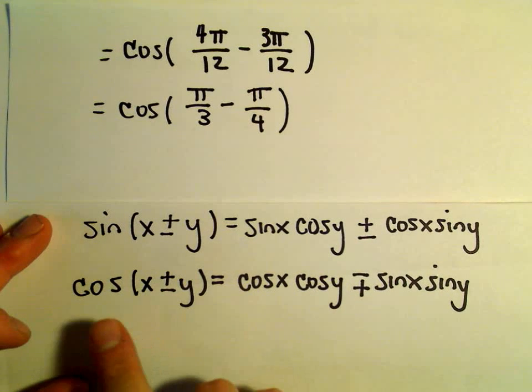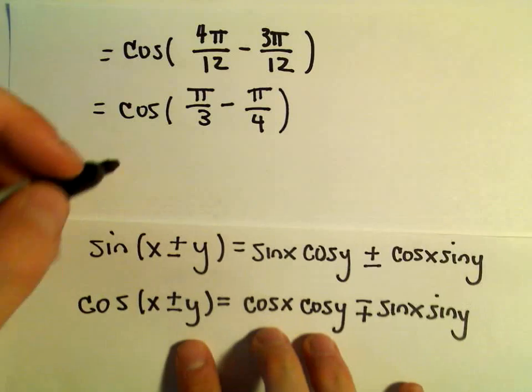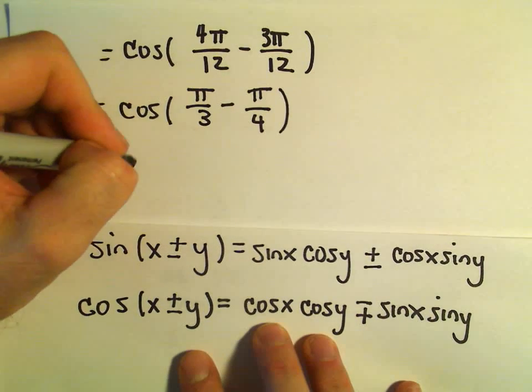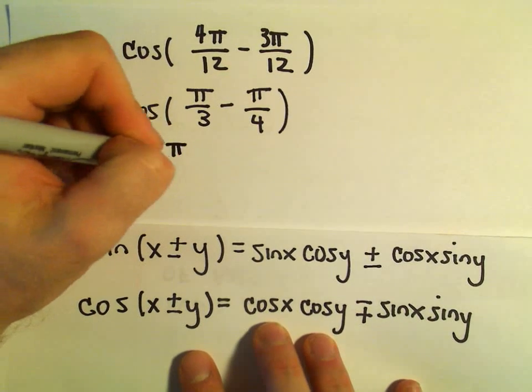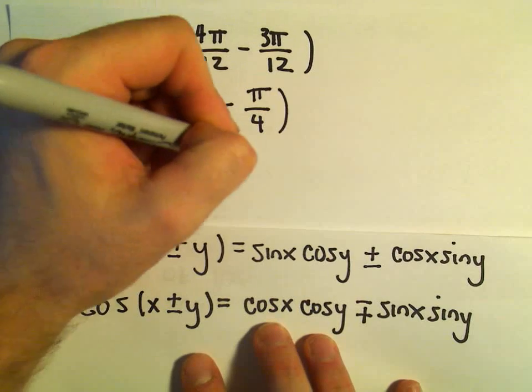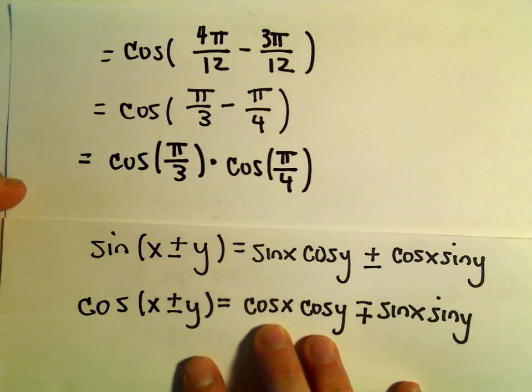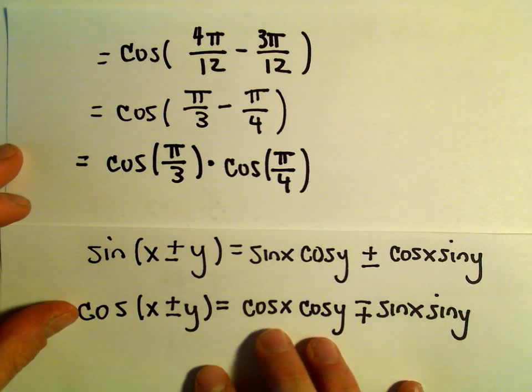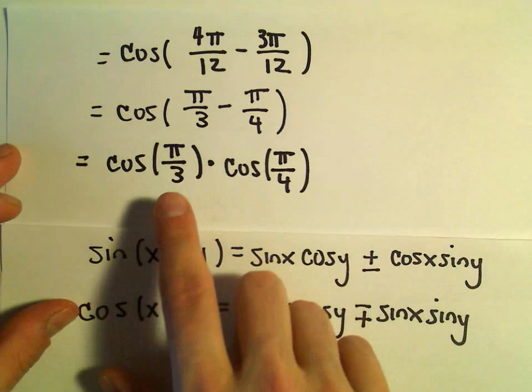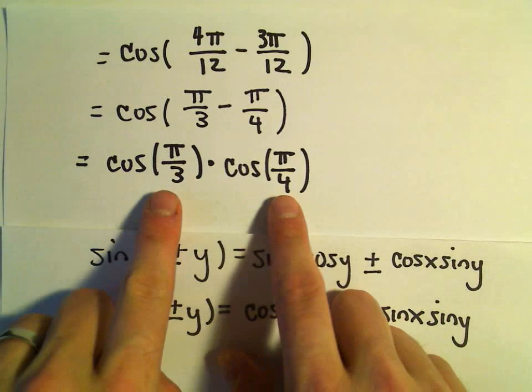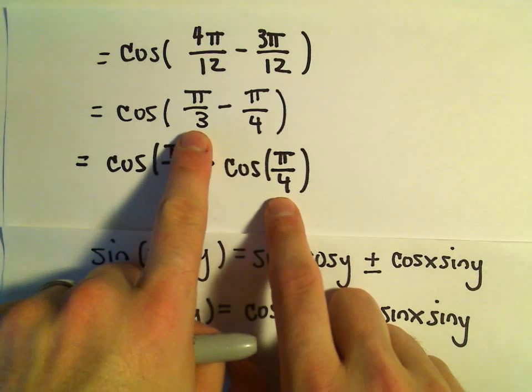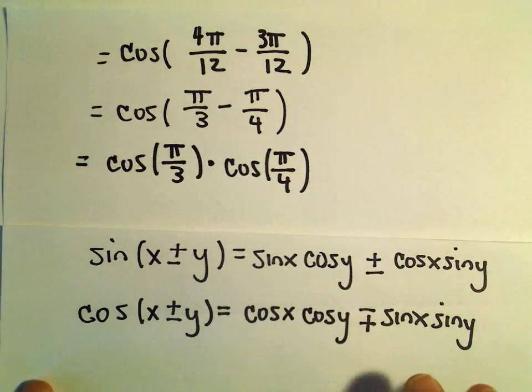I'm going to use this bottom identity now. It says you have cosine of something minus something. So I can write that as cosine of the first thing, pi over 3, times cosine of the second one, which is pi over 4. Again, you just forget about the plus or the minus in there. You forget about the positive and negative when you're just plugging it in. So you just use positive pi over 3 and positive pi over 4.